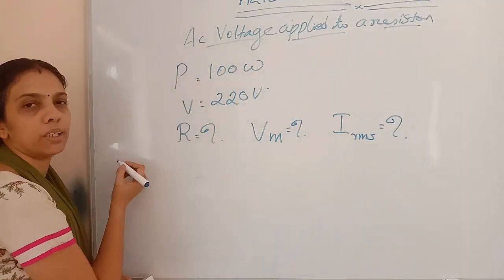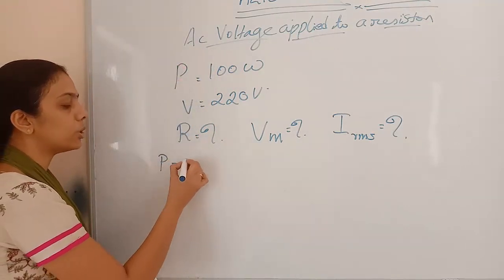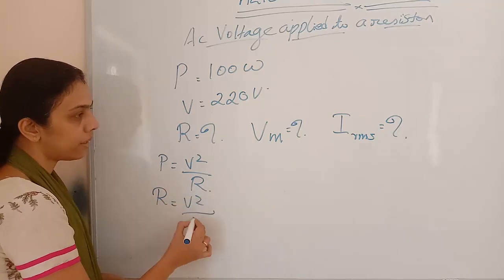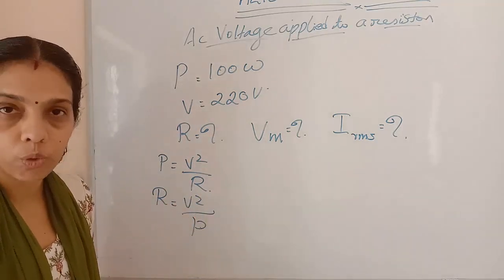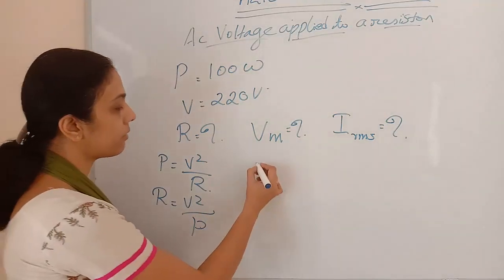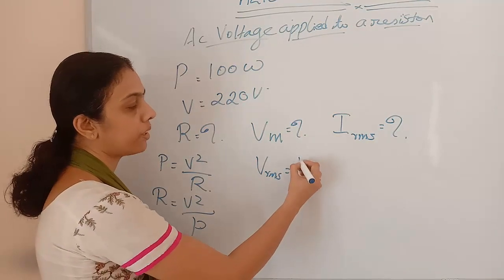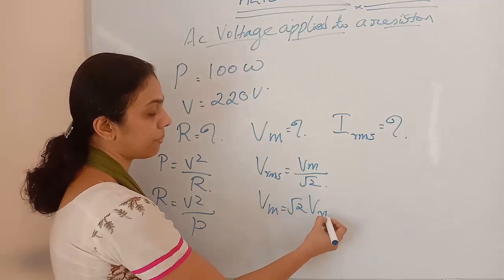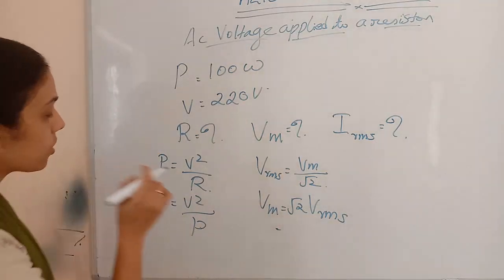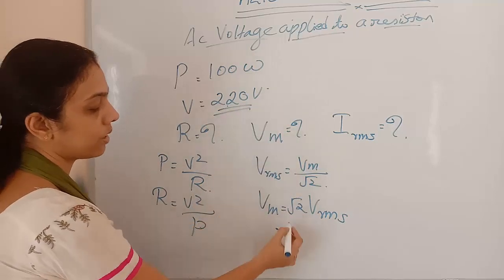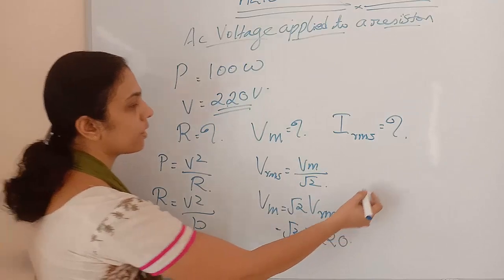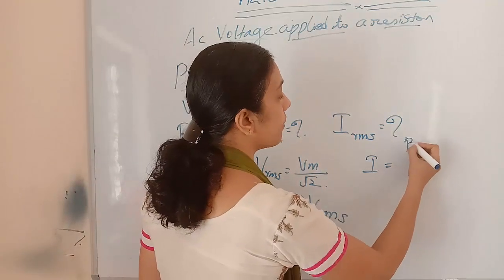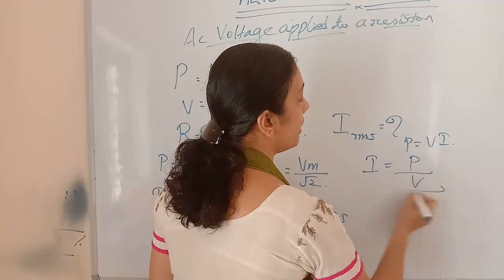For resistance, using P = V²/R, we get R = V²/P = (220)²/100. For peak voltage, V_rms = Vm/√2, so Vm = √2 × V_rms = √2 × 220. For RMS current, using P = V × I, we get I_rms = P/V = 100/220.